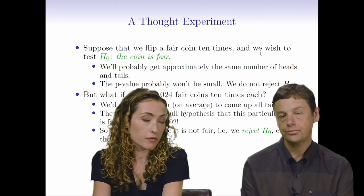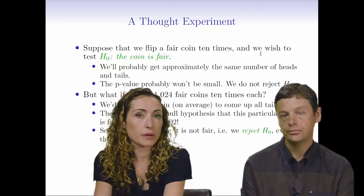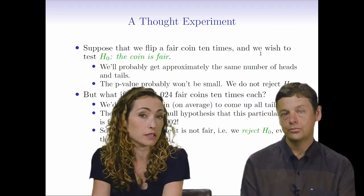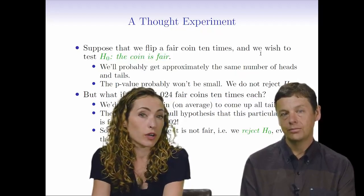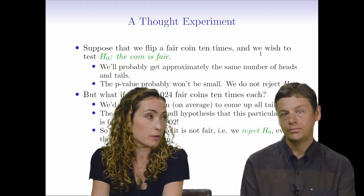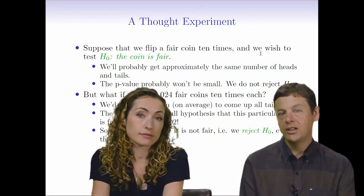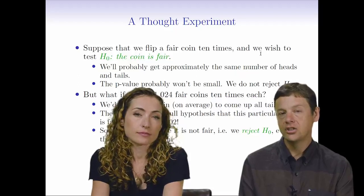Right, because it's 1 over 1024 plus 1 over 1024. There's two ways that we could get this extreme an outcome. Because we would be really surprised. If we think that the coin's probably fair, and that's our null hypothesis, we'll be really surprised if we get 10 tails, we'd be equally surprised to get 10 heads, presumably. So that's why to get the p-value, it's 1 over 1024 plus 1 over 1024. Because we're not specifying that it's more likely to be tails or heads under the alternative. It's just not equal.